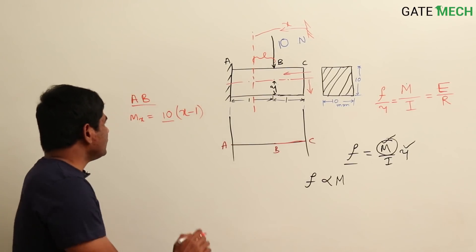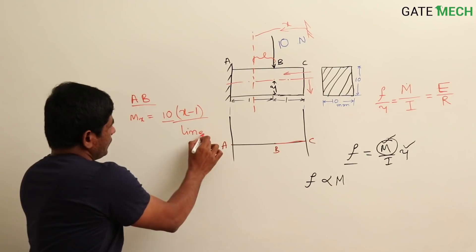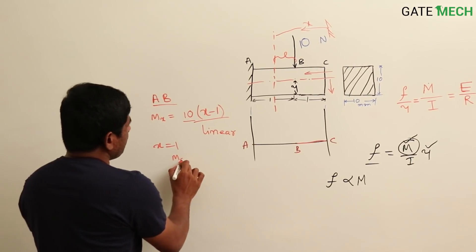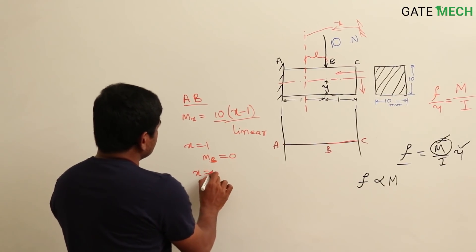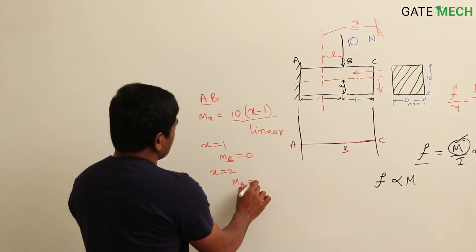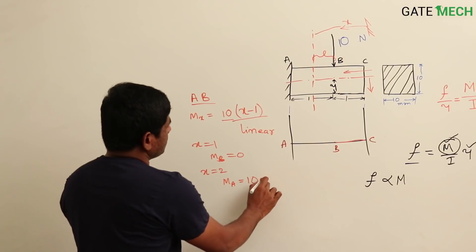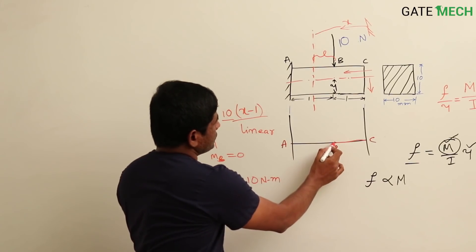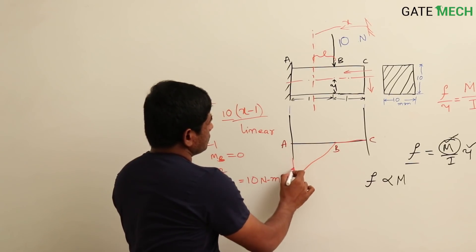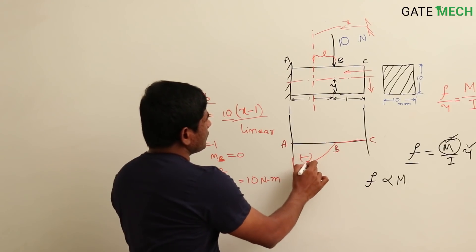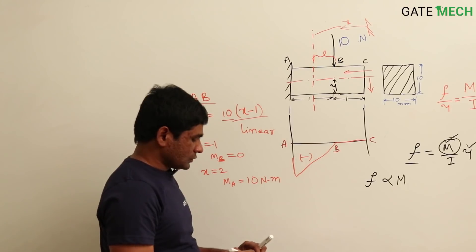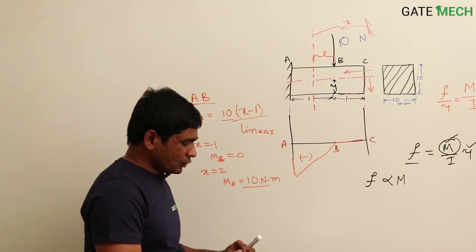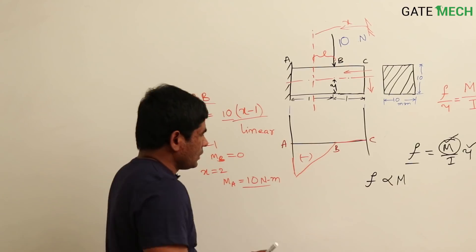The bending moment varies linearly. At X = 1, M becomes 0, and at X = 2, M = 10 × (2−1) = 10 Newton-meter. The bending moment moves in the negative direction because this produces compression. The bending moment itself is not negative, but when dealing with bending stress it produces compressive stress.